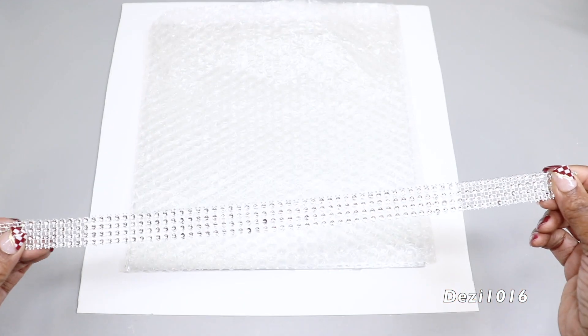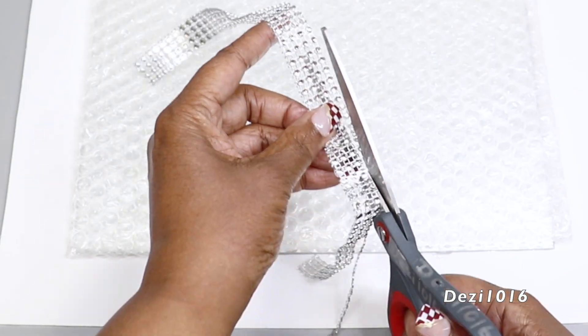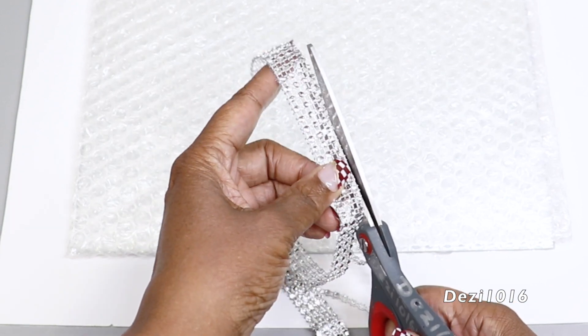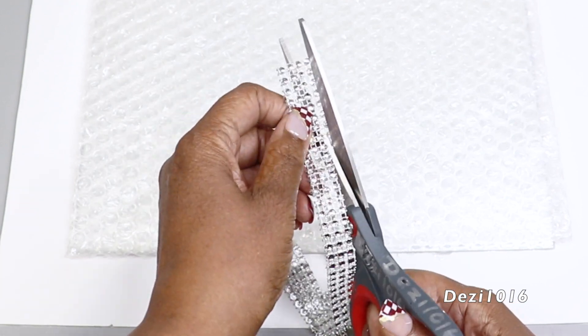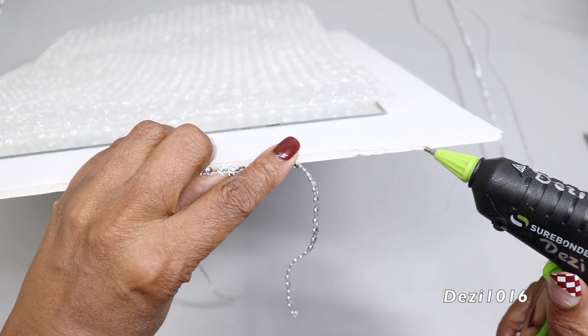What I'm going to do to decorate the edge of the foam board is cut out a single strip of the diamond wrap and apply that to the outer perimeter all the way around the foam board. This is going to give it a nice decorative look so it's not so plain.